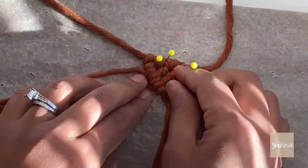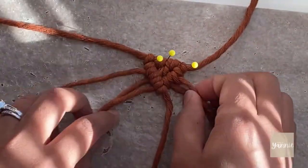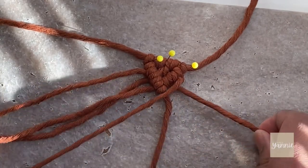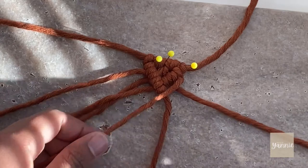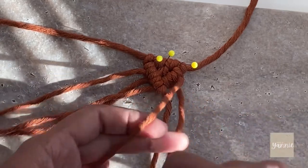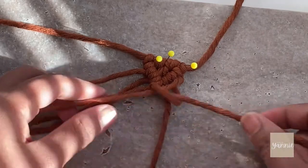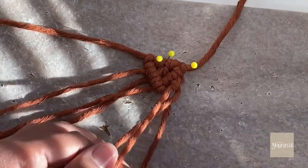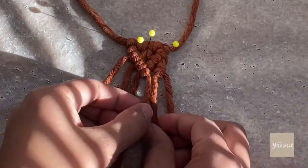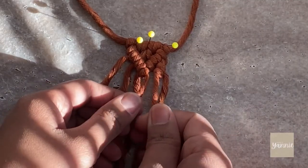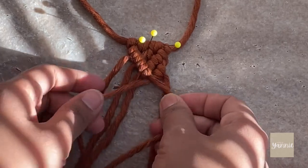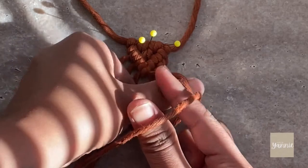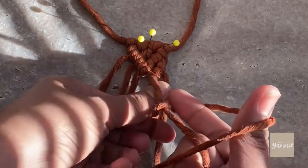Now let's add more double half-hitch knots on the right side. Grab the support cord from the left side over to the right side like so, and create double half-hitch knots to form an X.